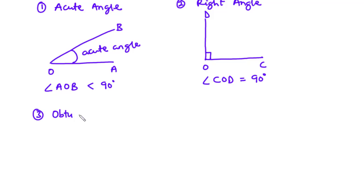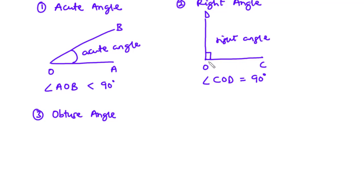The next angle is the obtuse angle. An obtuse angle is an angle whose measure is greater than 90 degrees but less than 180 degrees. Starting from the right angle at 90 degrees, if we pull down line OD in the anti-clockwise direction so it does not lie flat as OC, the new angle formed is greater than 90 degrees but less than 180 degrees.